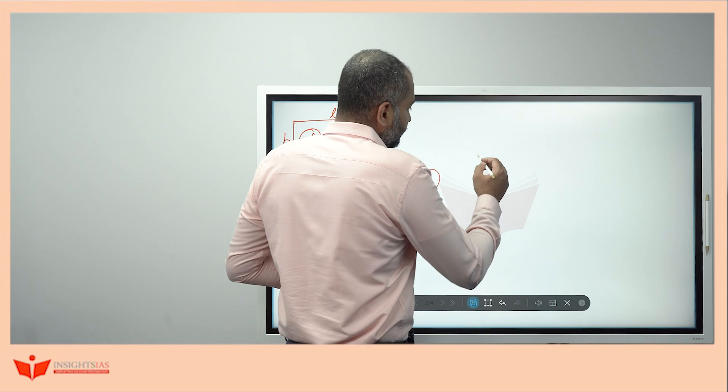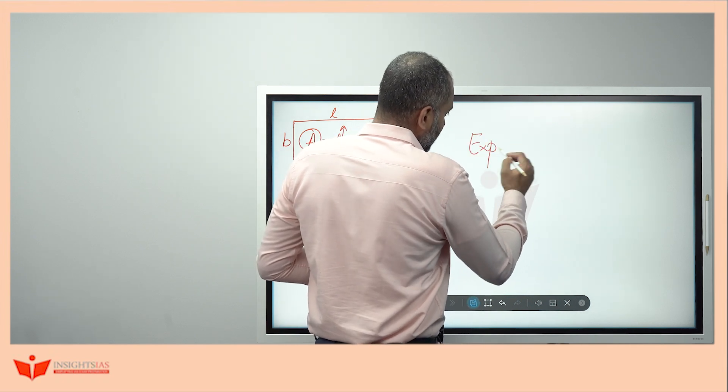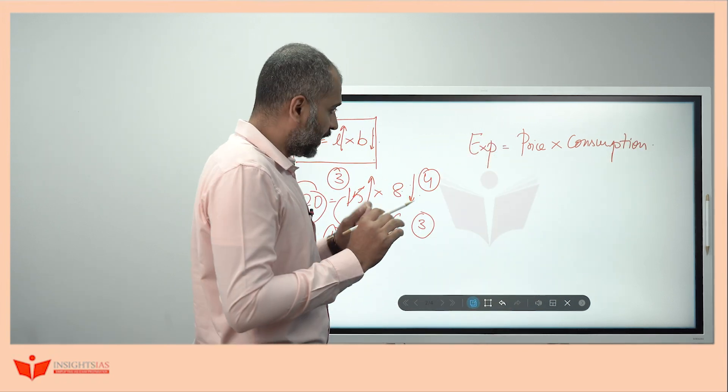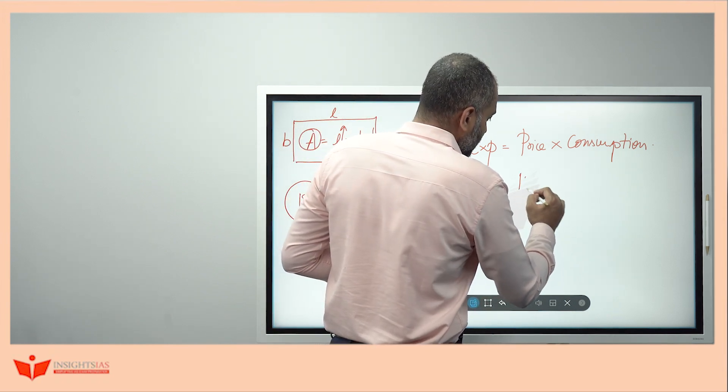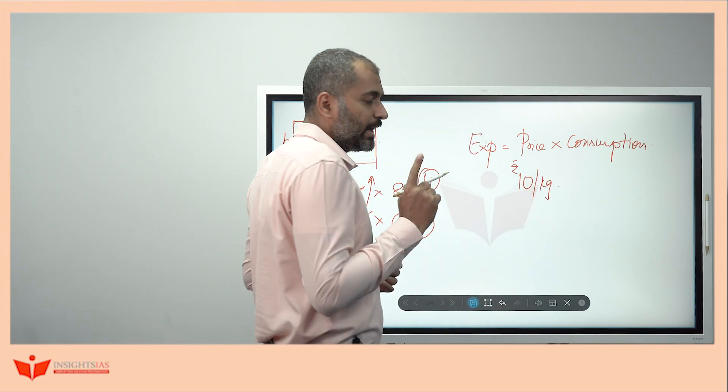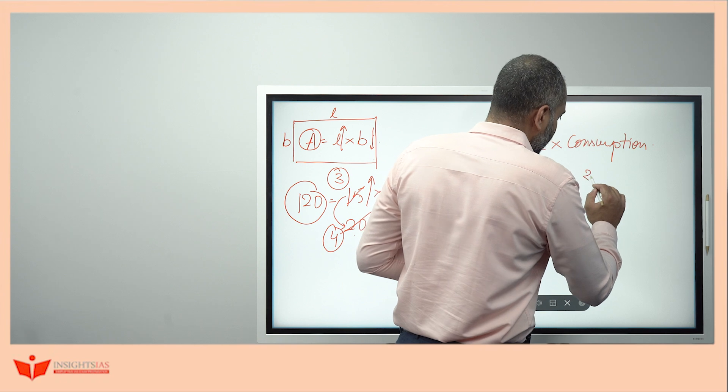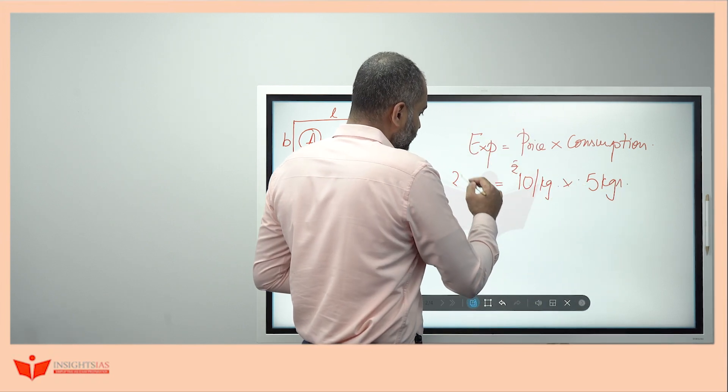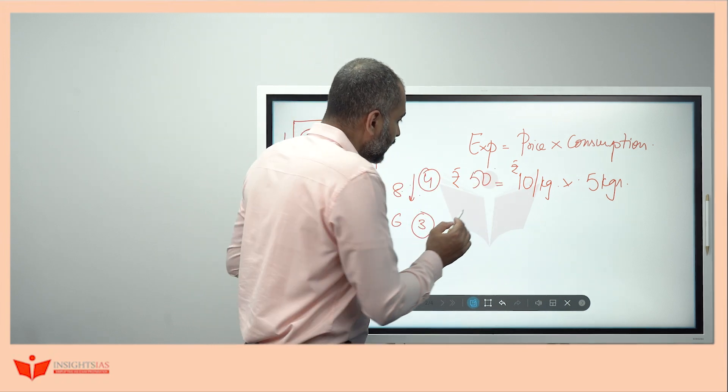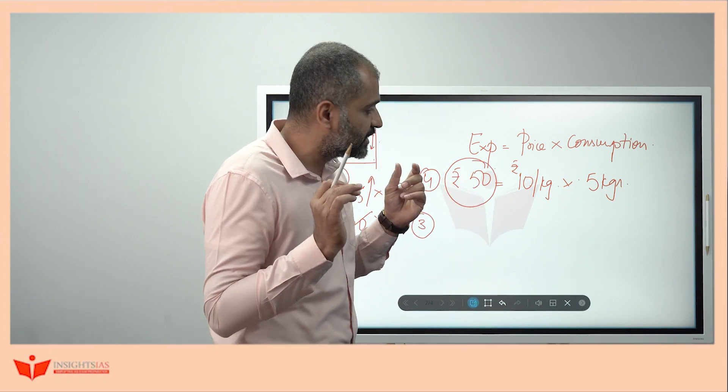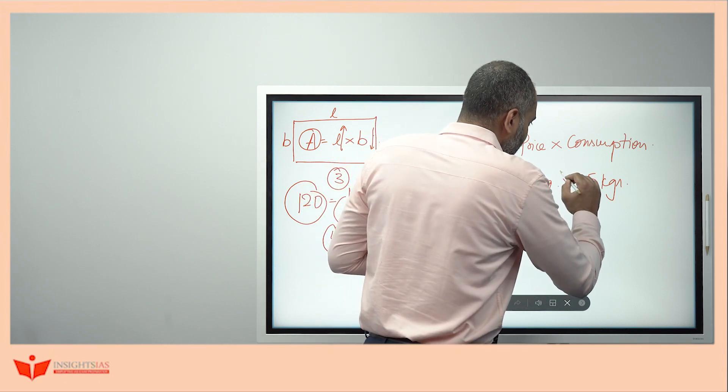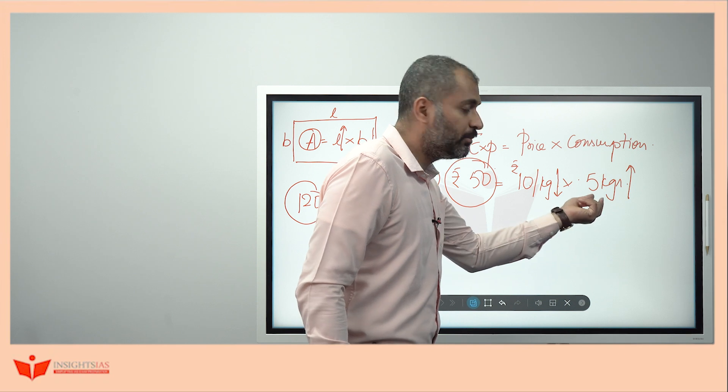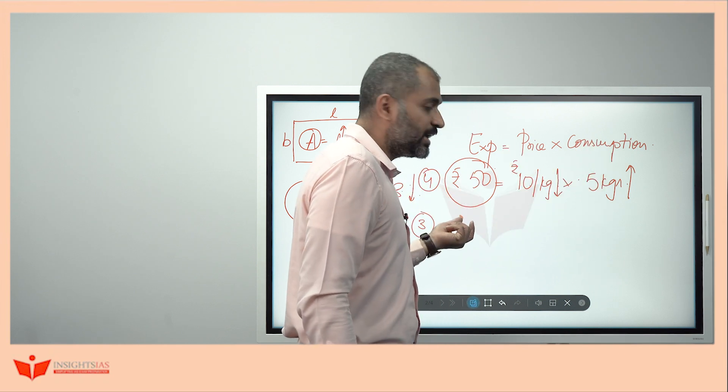I can say, the expenditure is equal to price into consumption. For example, let's say, the price of onion is rupees 10 per kg. And you are consuming 5 kgs. So, what is the cost you have to pay? 10 into 5 is equal to rupees 50. That is what the expenditure here.